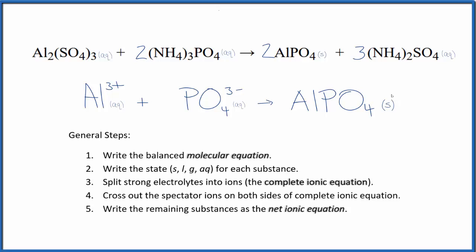So that's it. This is the balanced net ionic equation for Al₂(SO₄)₃ plus (NH₄)₃PO₄. This is Dr. B. And thanks for watching.